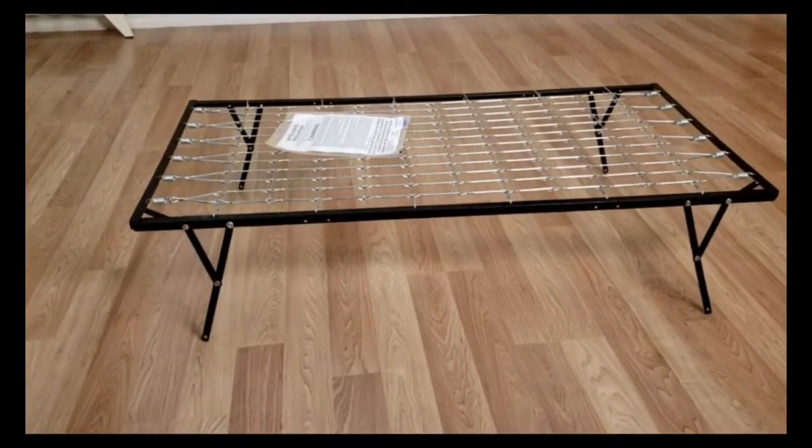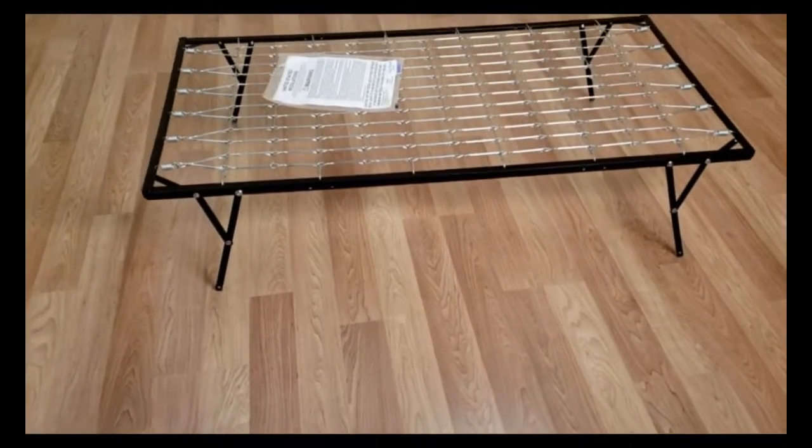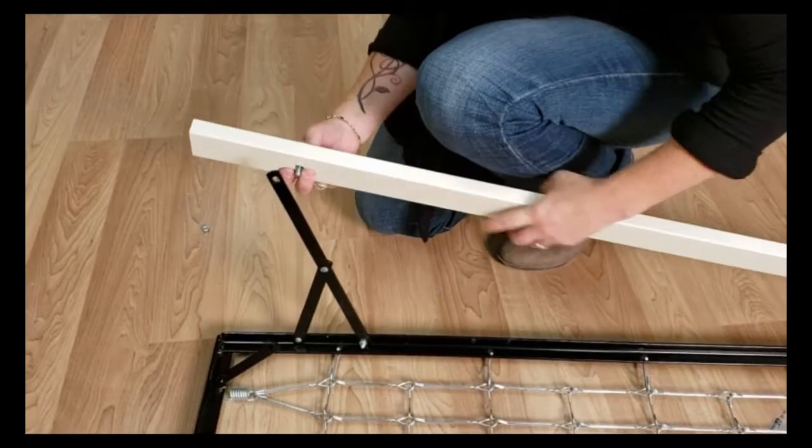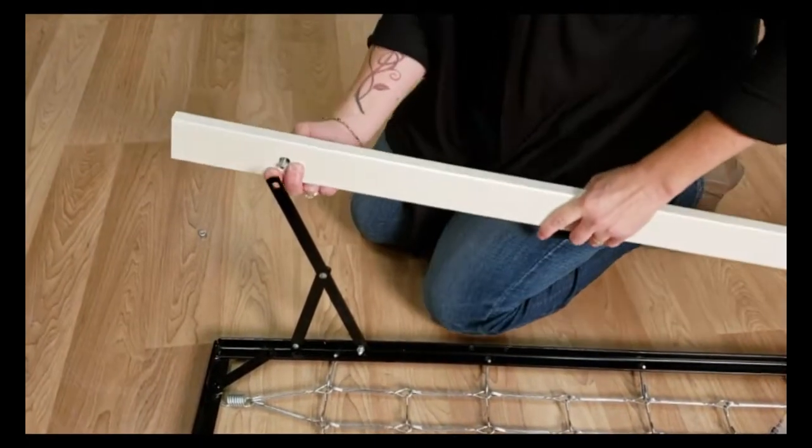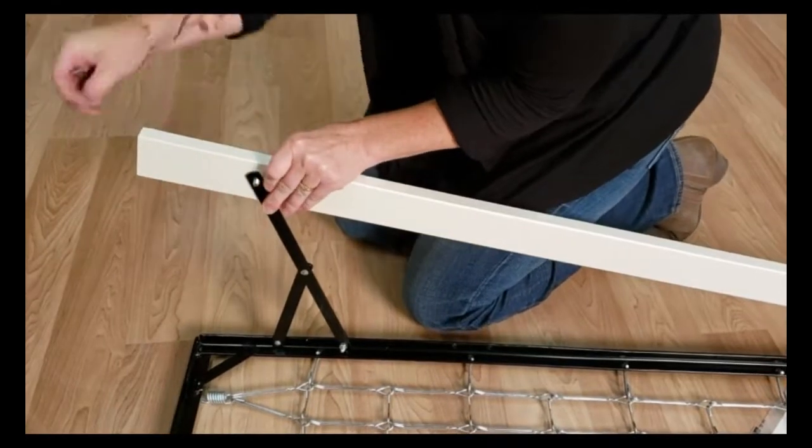This is what the spring deck looks like with all four legs locked into place. Next, install the spreader bars with a bolt and a nut into each of the spring deck legs.